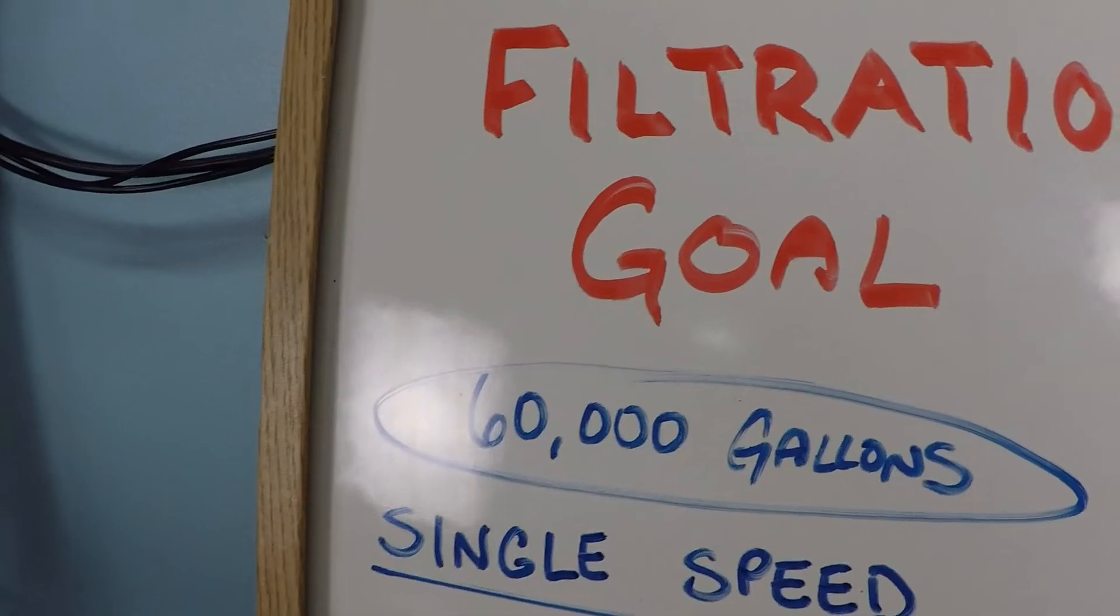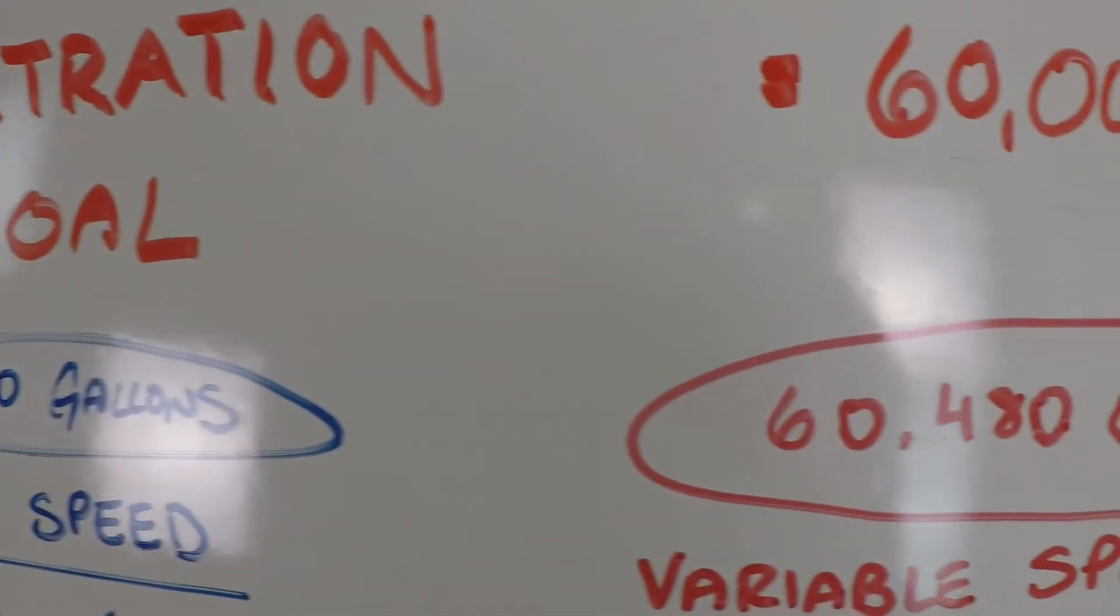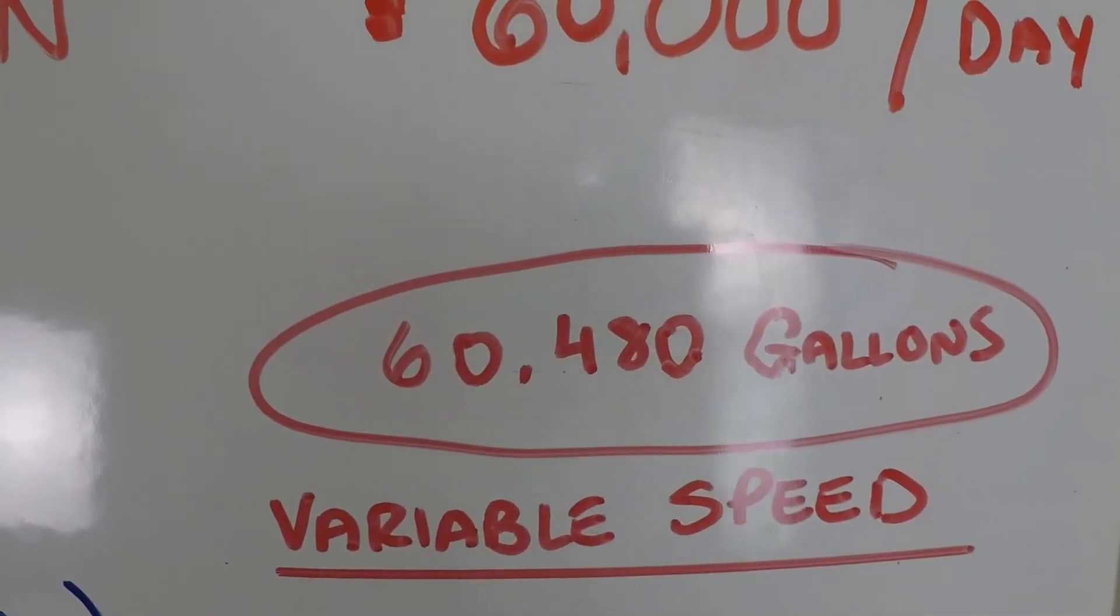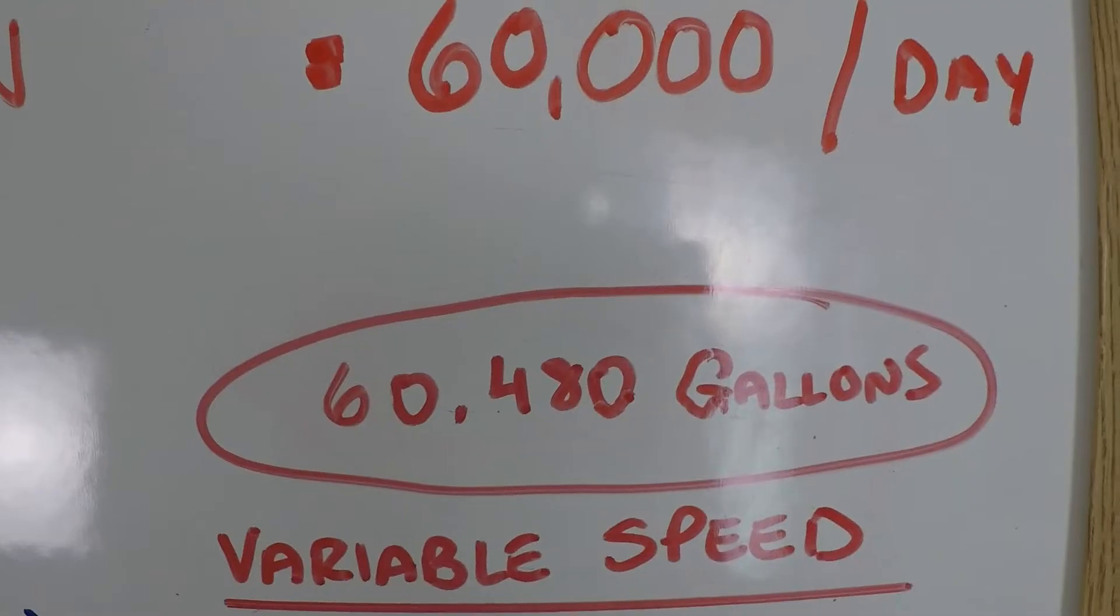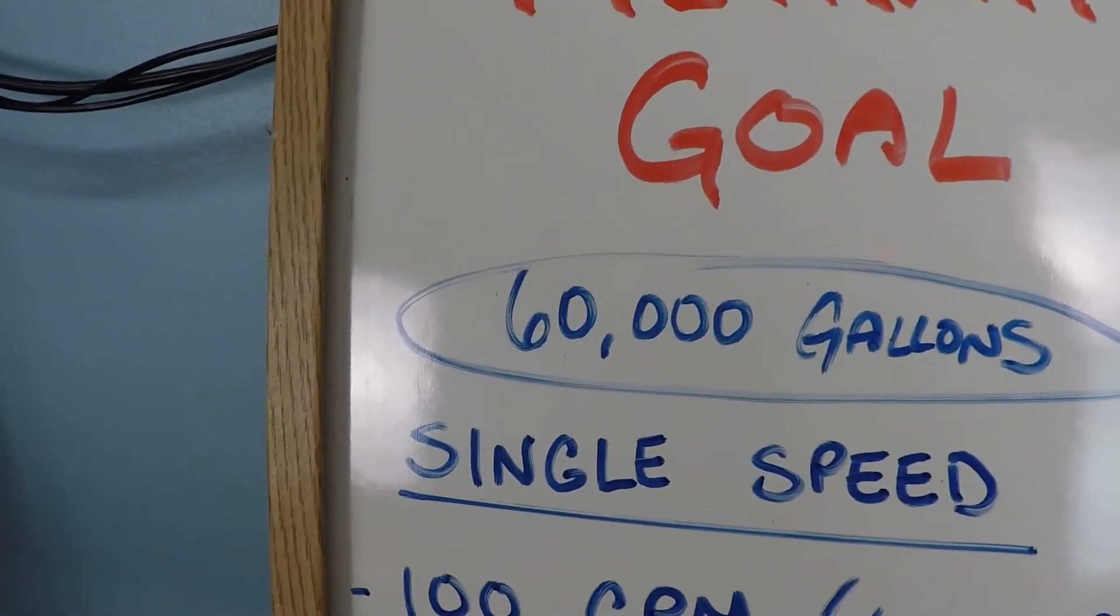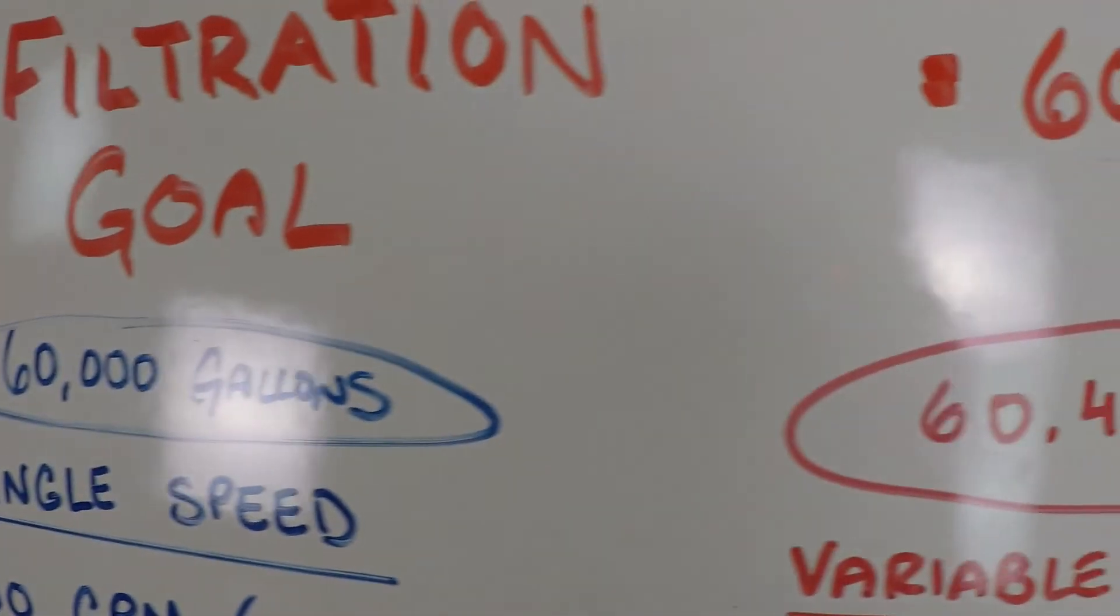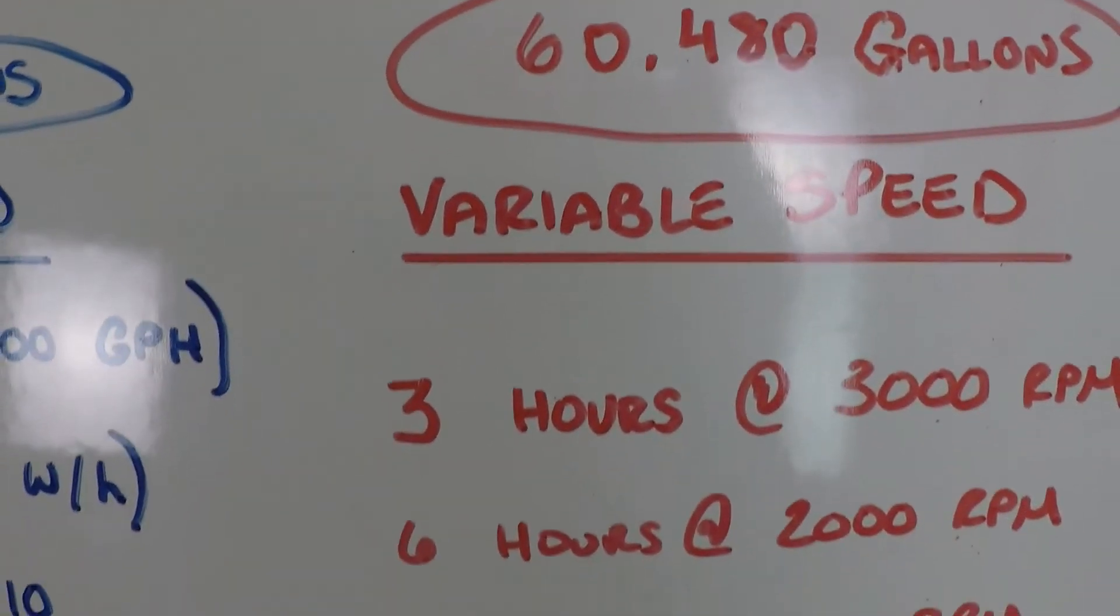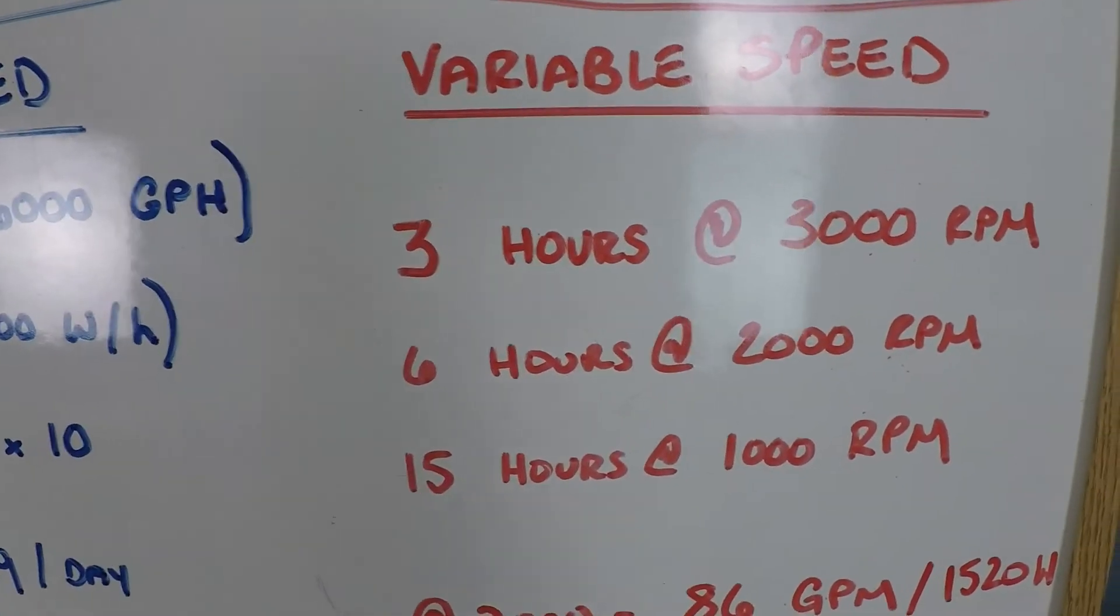So this single speed pump was able to pump 60,000 gallons per day. I'm going to show you how we can pump 60,480 gallons per day with this variable speed pump for substantially less money than this. And we're going to do it without compromising the quality of the filtration the pool gets.